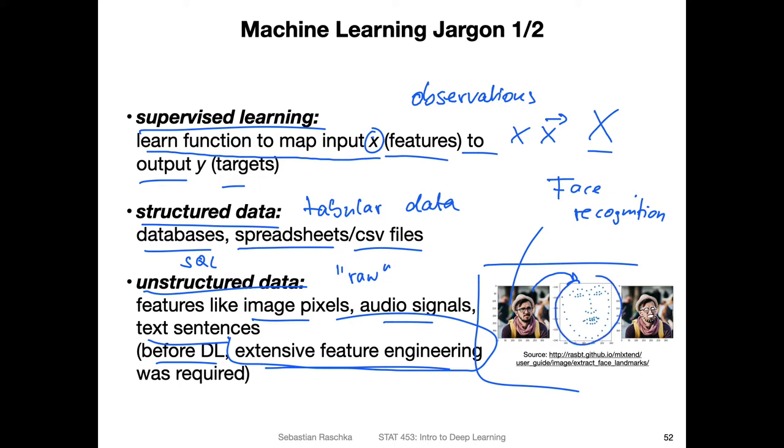However, what I'm illustrating here is that we can extract features from this image. So here, this is a traditional method using facial keypoint extraction, extracting so-called face landmarks. And this would be a feature engineering step, like simplifying the image such that it only now contains these keypoints. I think there are around 67 or so keypoints.